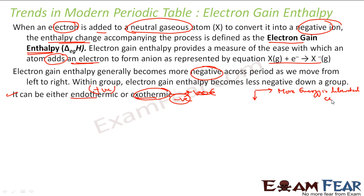For example, chlorine needs only one electron, so it is eager to get an electron and will release energy when it does. Oxygen needs two electrons, so it is slightly less interested in gaining just one electron. Chlorine is more eager to get one electron, so more energy is liberated when an electron is added to chlorine compared to oxygen. Going down a group, less energy is liberated.